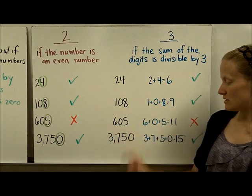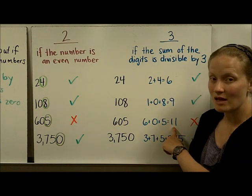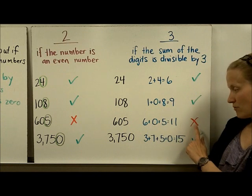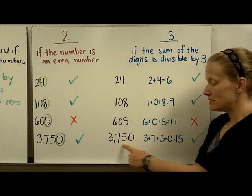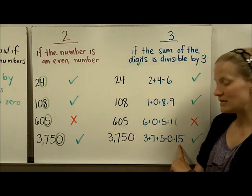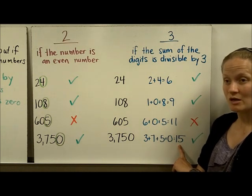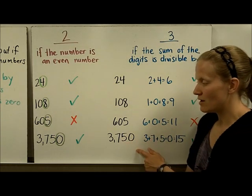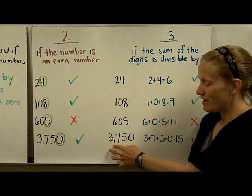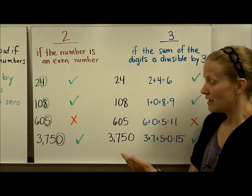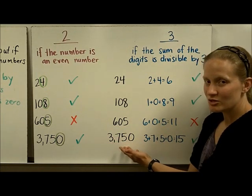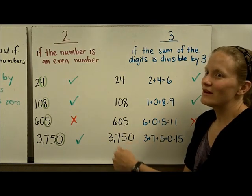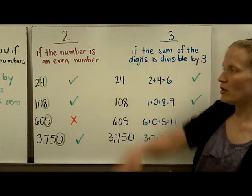For 605, the three digits add up to 11. 11 is not a multiple of 3, so 605 is not divisible by 3. For 3,750, the digits add up to 15. 15 is a multiple of 3, so that number is divisible by 3. This is a great example of why a divisibility rule is useful — I can quickly do a simple addition problem to know a number is divisible by 3, rather than doing the full division.